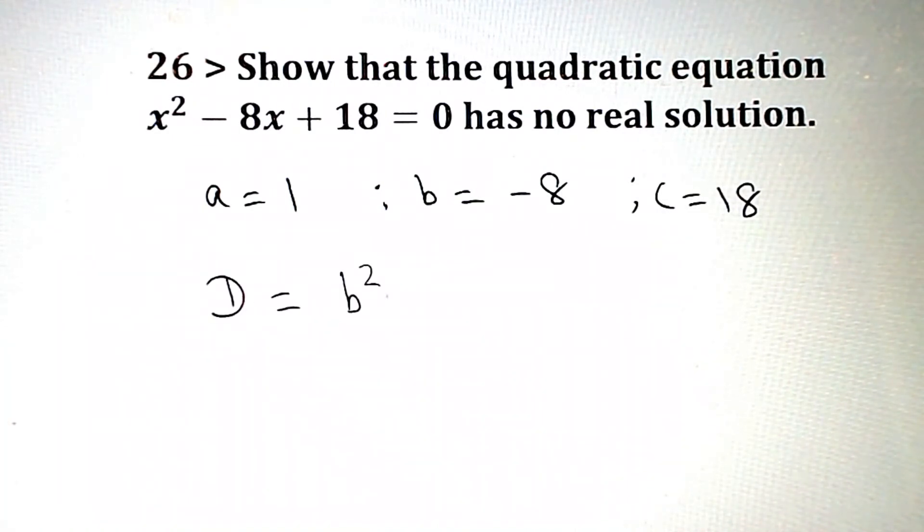D ka formula hai b square minus 4ac. So minus 8 ka square minus 4 into a ka value 1 and c ka value 18. Minus 8 ka square is 64 minus 18 into 4, 72.